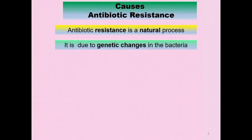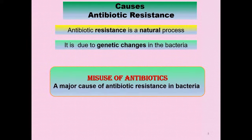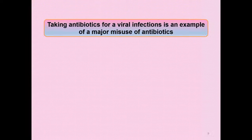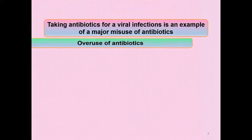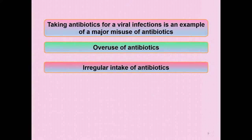Causes of antibiotic resistance: antibiotic resistance is a natural process due to genetic changes in bacteria. The major cause is misuse of antibiotics, which accelerates the antibiotic resistance ratio and is responsible for the transmission of resistant bacteria in the population. Taking antibiotics for viral infections is a major example of misuse, as is overuse and irregular intake of antibiotics.